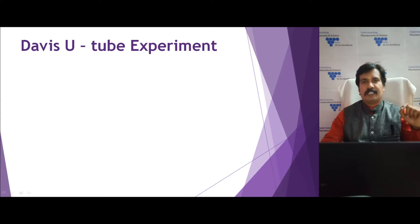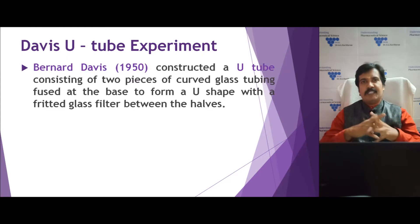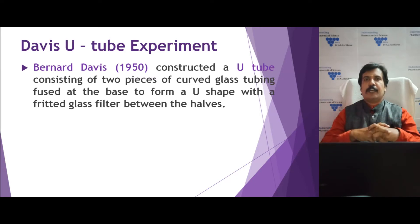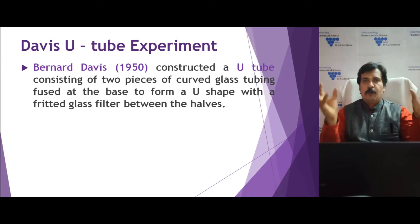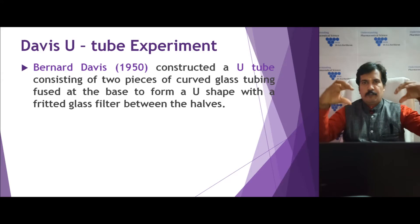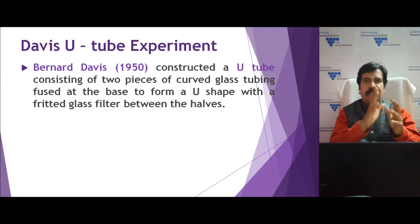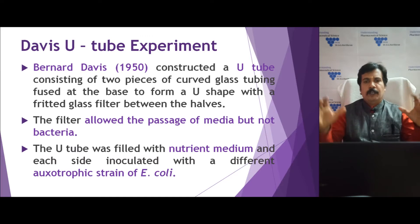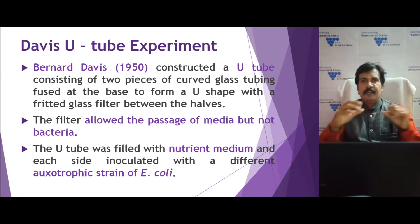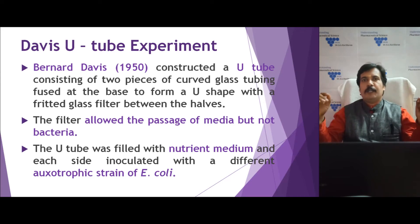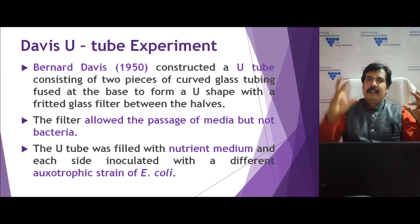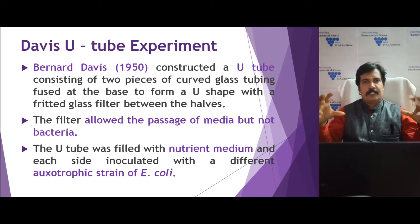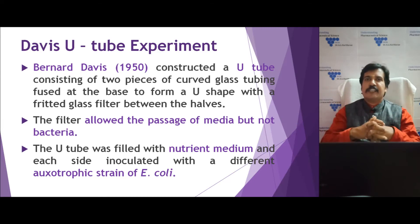In 1950, Bernard Davis performed a U-tube experiment. He constructed a U-shaped tube and joined the two arms at the bottom by placing a glass filter. This glass filter allows media to pass but not bacteria. The U-tube was filled with nutrients. On one side he added one E. coli mutant strain, and on the other side he added another mutant strain. He incubated them and pumped the media back and forth so that if any DNA transfer by bacterial transformation could happen, it would.